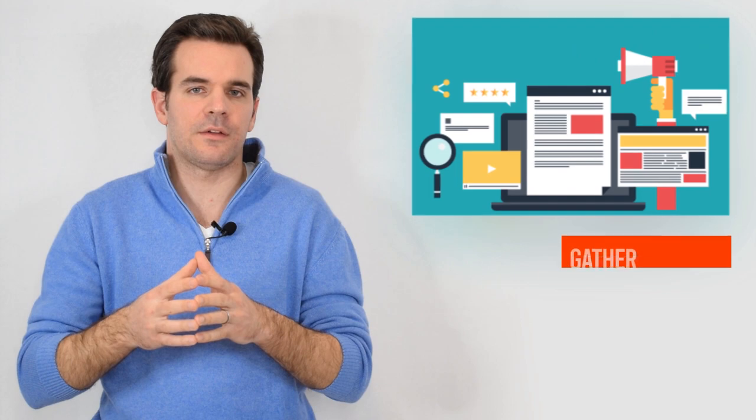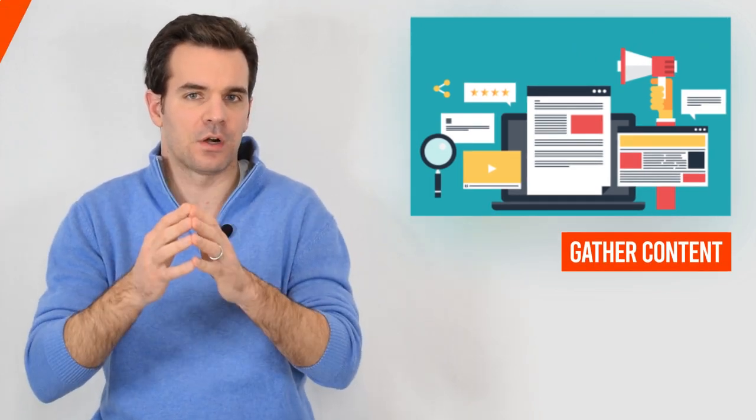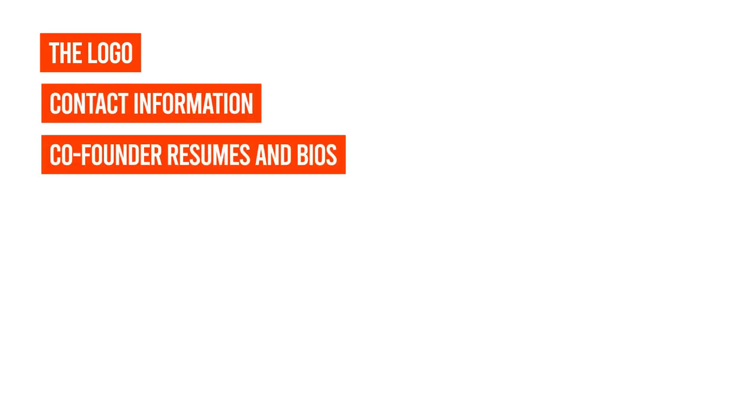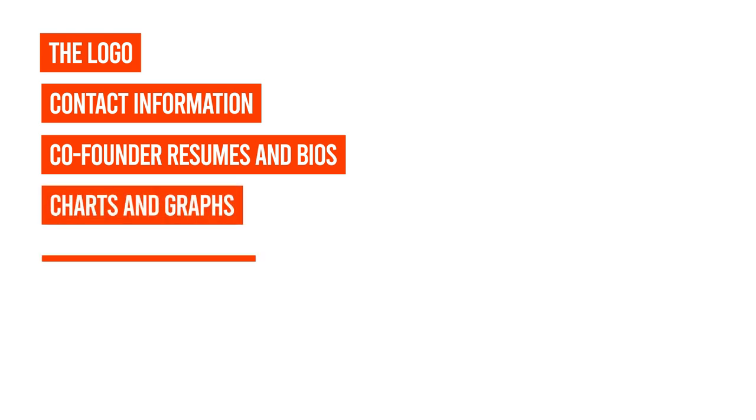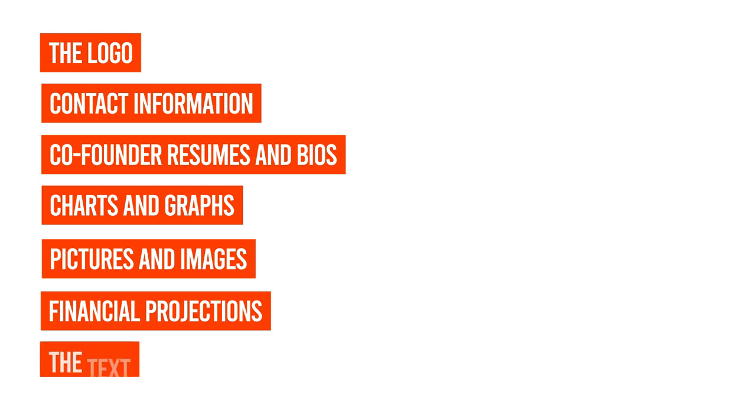Another critical piece of this is to get your content together. When it comes to content, some of the things that you want to keep in mind are the following: The logo. Contact information. Co-founder resumes and bios. Charts and graphs. Pictures and images. Financial projections. The text.